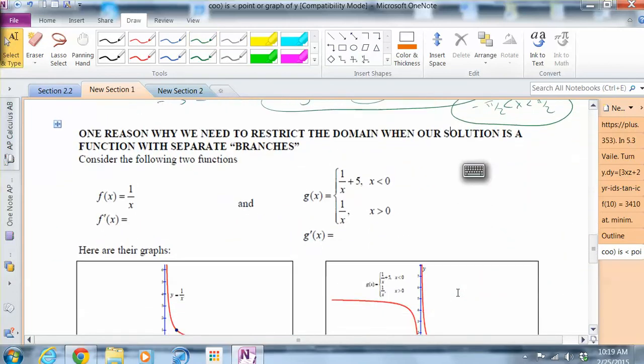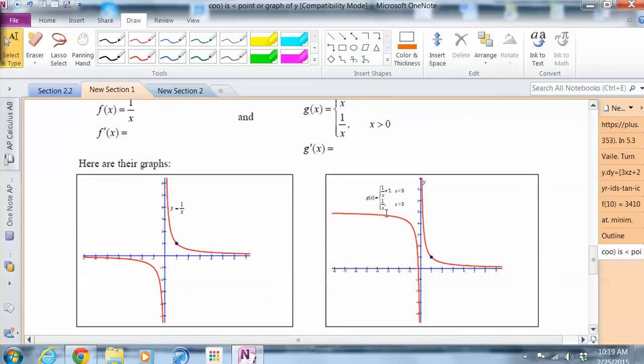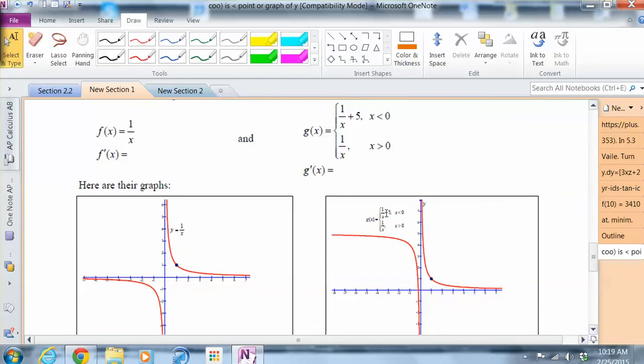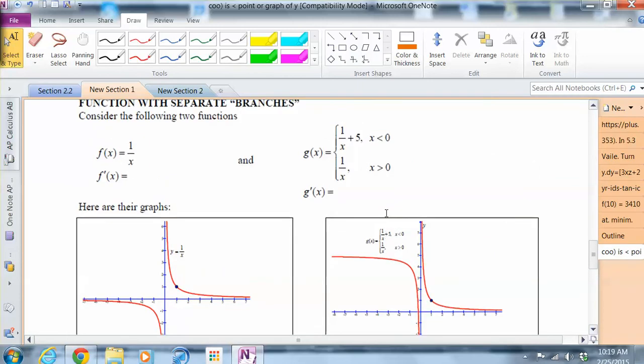Lastly, one reason why we need to restrict the domain when our solution is a function of separate branches. Let's say we had f of x equals one over x, and g of x equals one over x plus 5 when x is less than zero, one over x when x is greater than zero. And the graphs of those functions are shown below. So one's a piecewise function, one's just a function that we typically see.